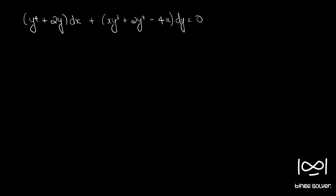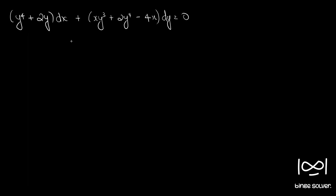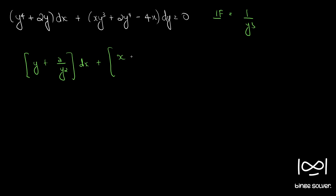We have our equation and the integrating factor is 1 by y cubed. If we multiply throughout by 1 by y cubed, we have: y raised to 4 by y cubed is y, plus 2 by y squared, dx, plus x plus 2y minus 4x by y cubed, dy equal to 0. This is our new M and this is our new N.